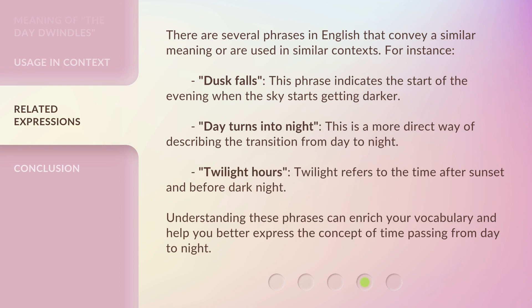There are several phrases in English that convey a similar meaning or are used in similar contexts. For instance, dusk falls — this phrase indicates the start of the evening when the sky starts getting darker. Day turns into night — this is a more direct way of describing the transition from day to night.